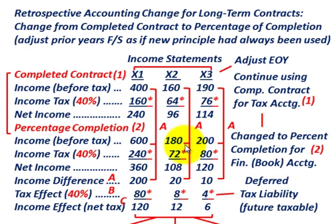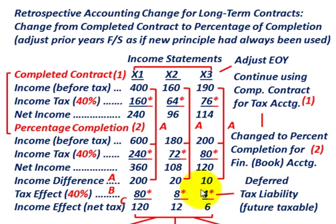For year X3: income before tax is $190,000, income tax at 40% is $76,000, and net income is $114,000. For percentage of completion: income before tax is $200,000, income tax at 40% is $80,000, and net income is $120,000. The difference in income tax — $76,000 versus $80,000 — gives a deferred tax liability of $4,000, because we're paying less taxes using the completed contract method for tax purposes versus the percentage of completion method for book purposes.